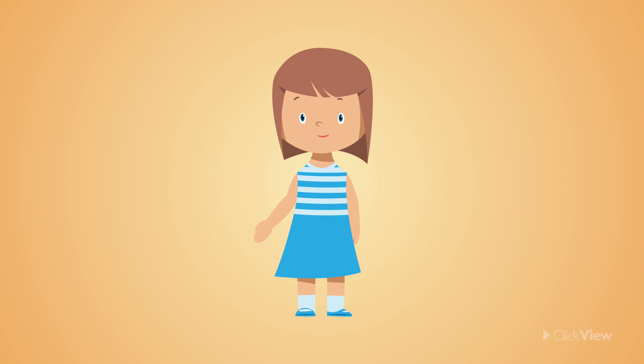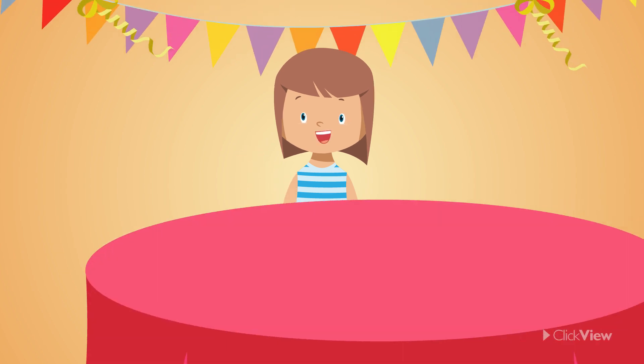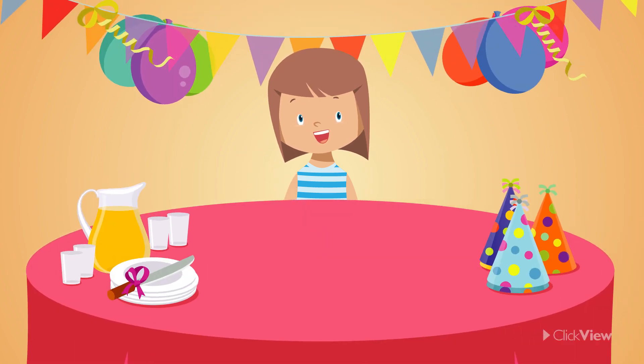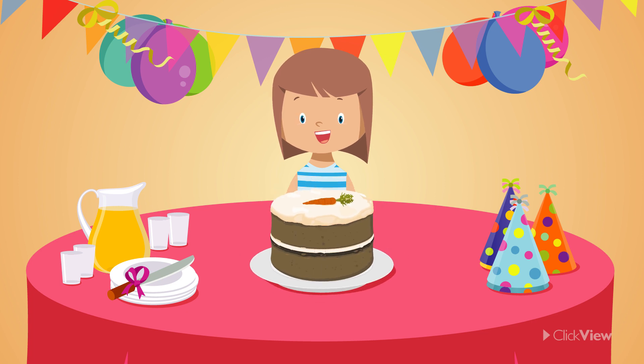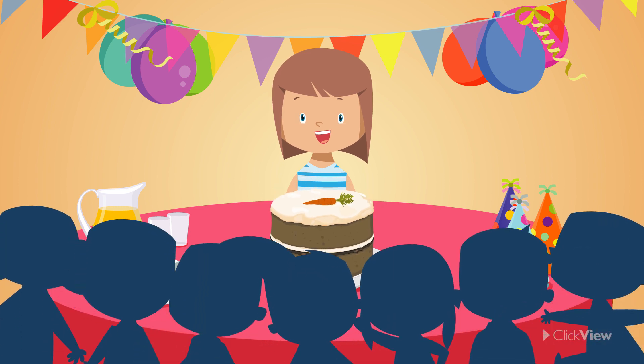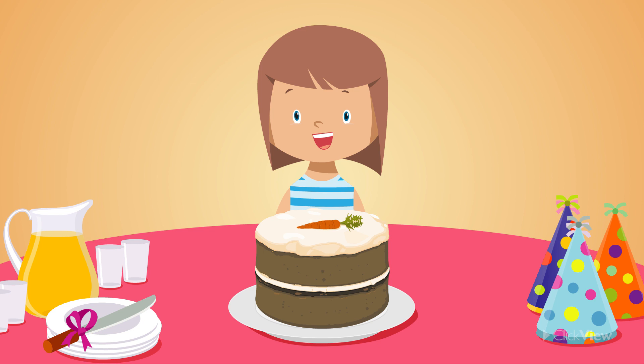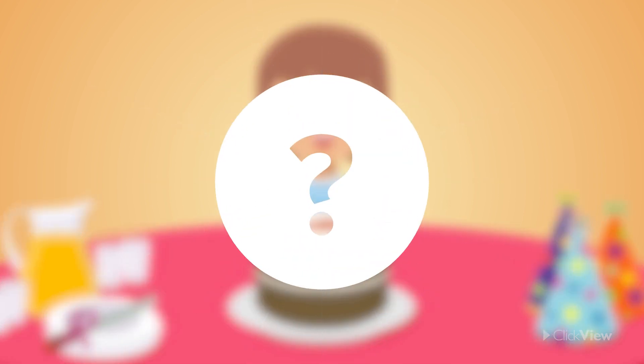This is Lily. It's her birthday today. She has bought an amazing carrot cake for her birthday party to share with her seven friends. Lily wants to share her birthday cake equally so it's fair for everyone. But how can she do this?